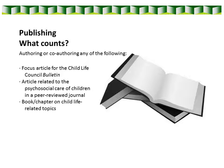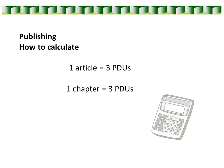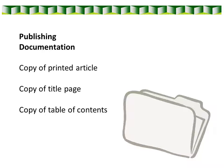Moving on to publishing. A focus article for the CLC Bulletin, an article in a peer-reviewed journal, or a book or chapter on topics related to child life earns three PDUs. The calculation is straightforward: one article or one chapter is equivalent to three PDUs. If you write a book with two chapters you earn six PDUs, three chapters earns nine PDUs, and so on. For documentation, a copy of the printed article, the title page, or table of contents of a book are all acceptable.